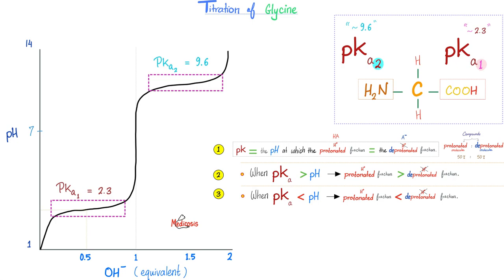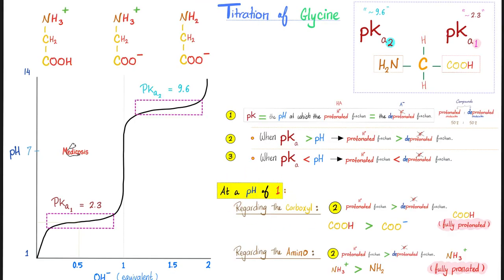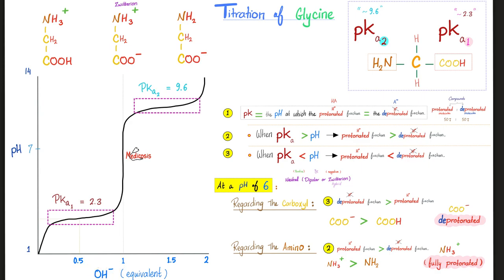Let's talk about titration of glycine. Write the three equations down. First, if the pH is 1, regarding the carboxyl, 1 is less than 2.3. The pKa is greater than the pH. Therefore, more protonated. This will be COOH and NH3 plus. All of them are protonated. Keep adding more base. pH is going to rise and rise and rise until you plateau. Why did I plateau? Because at this moment, the pH of the solution equals the pKa1, which is of the carboxyl group, around 2.3.